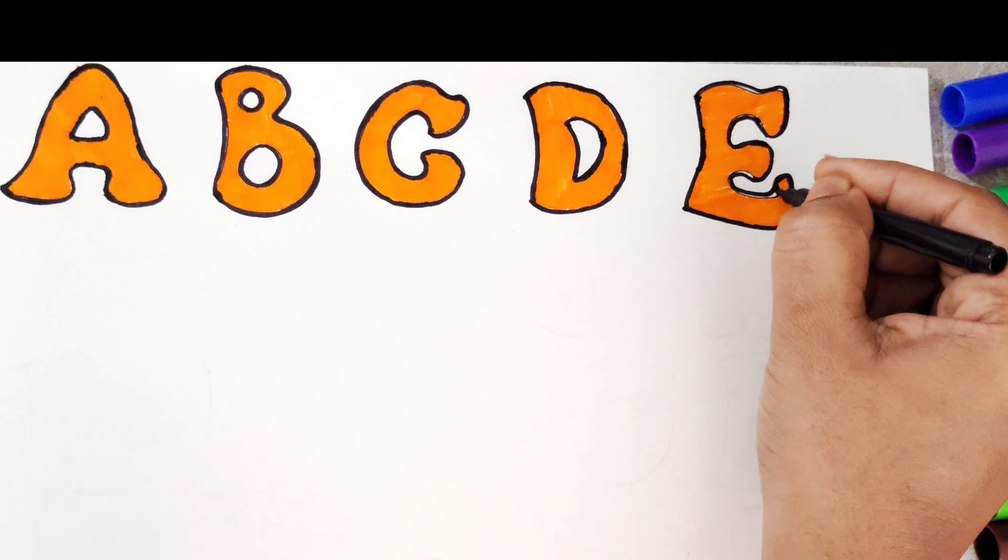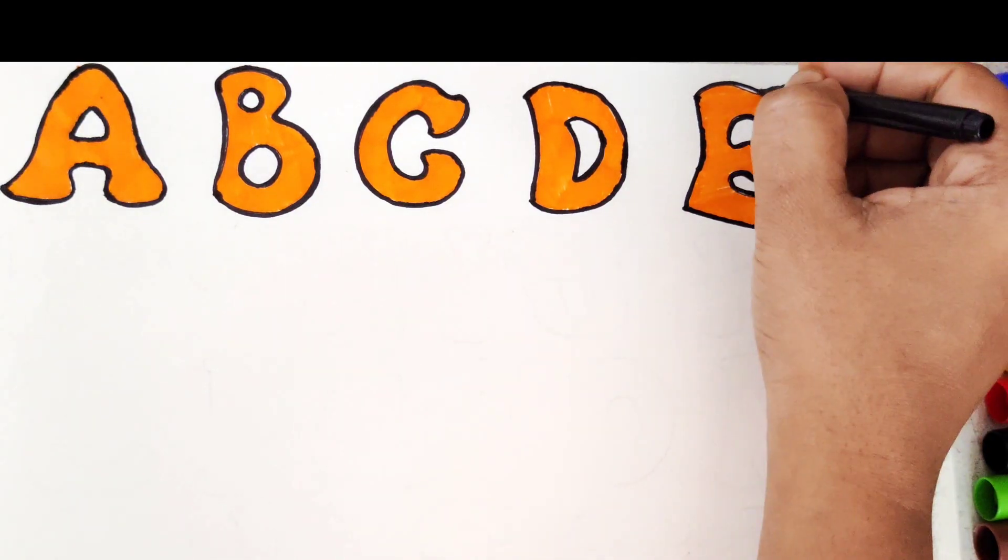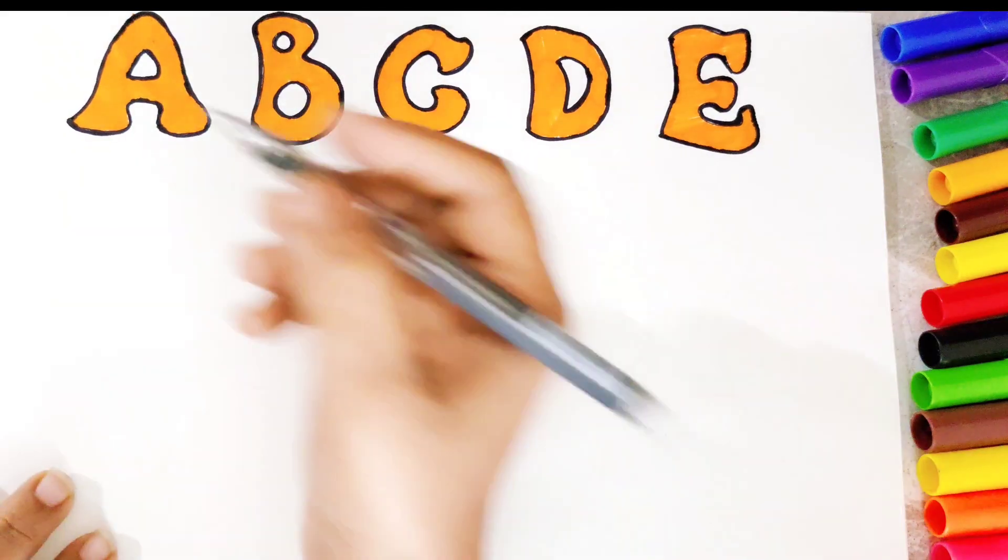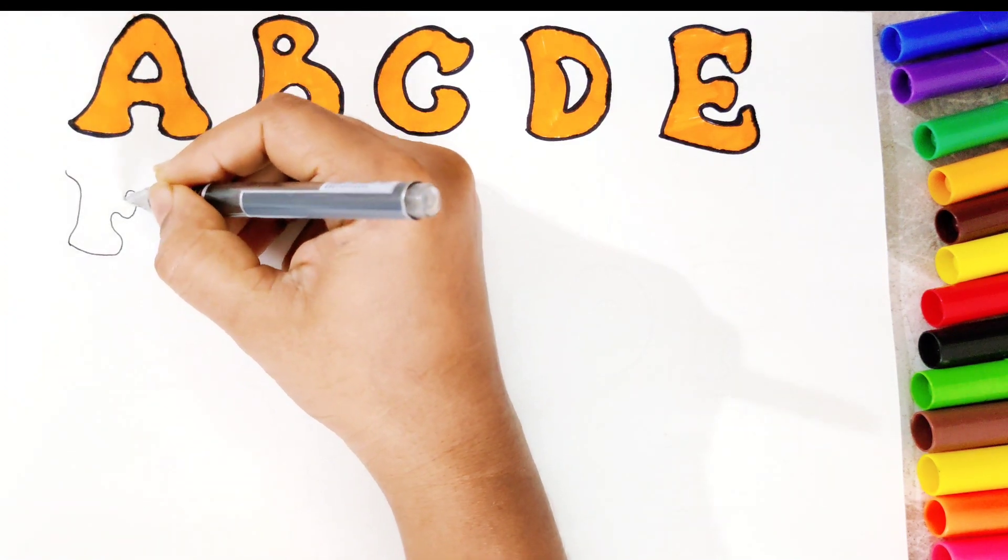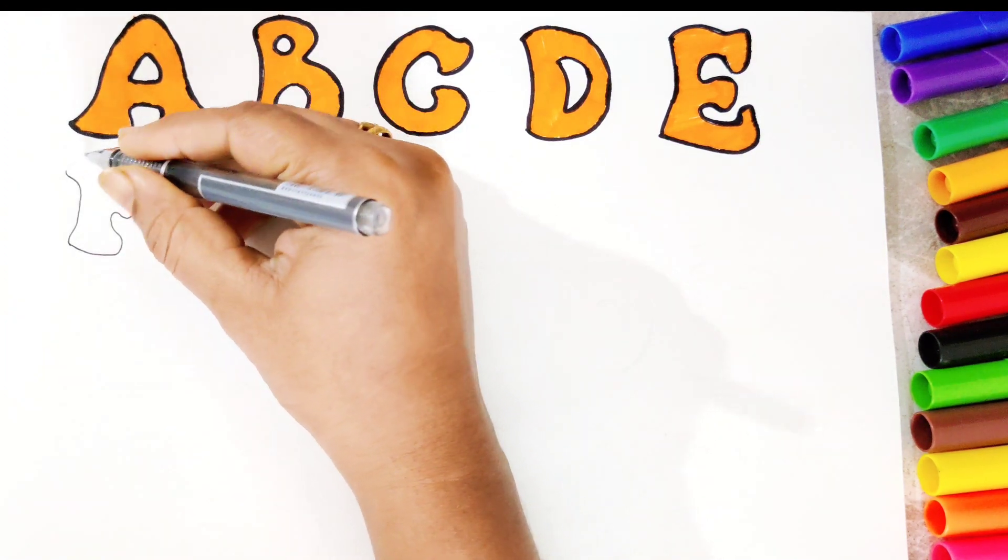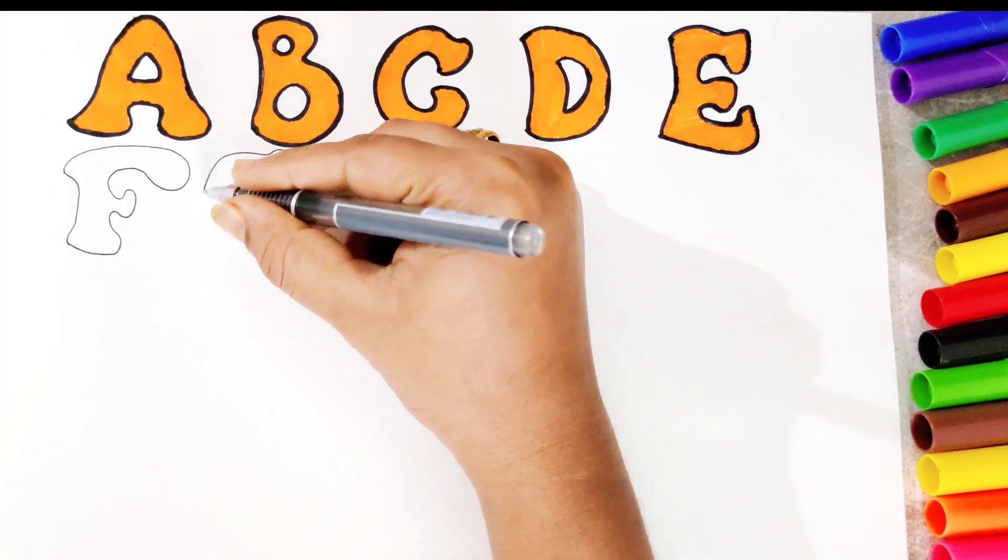Wow, these alphabets are looking amazing. Now let's start sketching rest of the alphabets. F for fish.